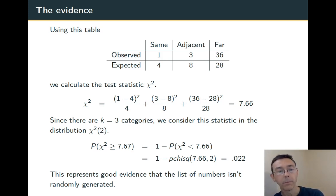And we get 0.022, pretty small P value. This represents good evidence that that list of numbers on the previous slide is not actually randomly generated, but was in fact created by a fallible human being.